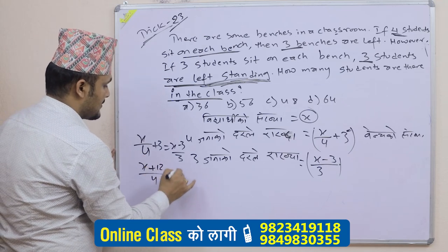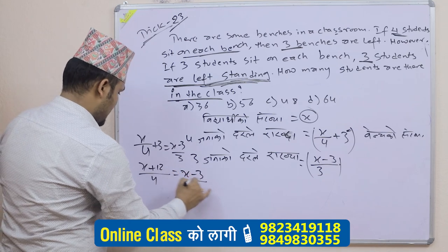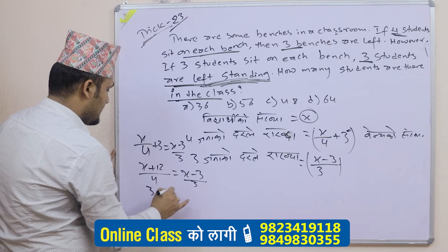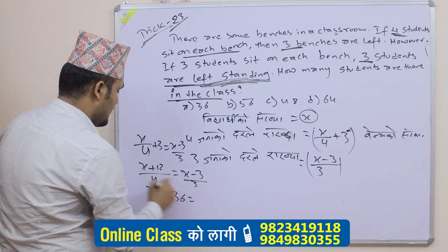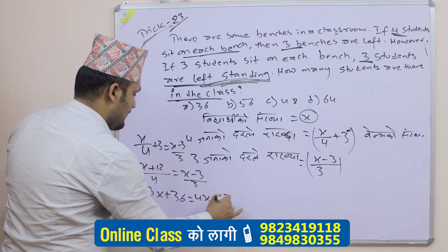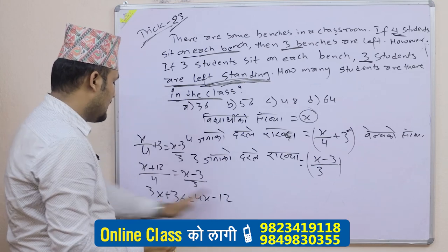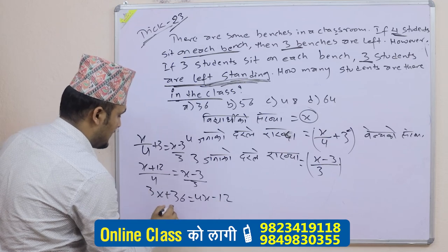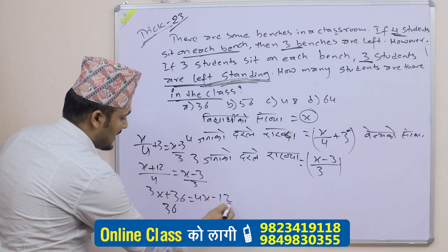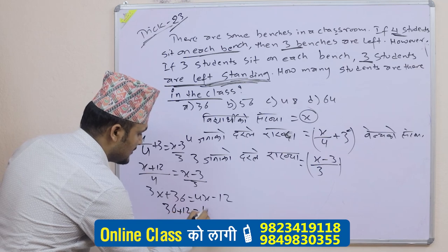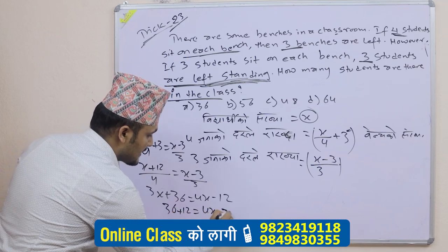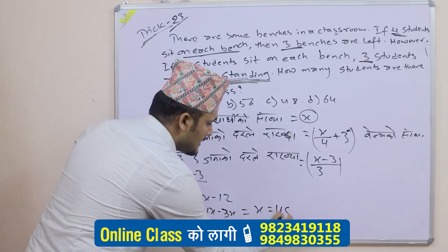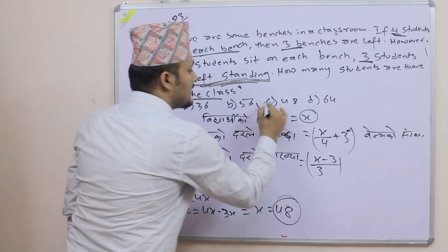x plus 2 will equal x minus 3 over 3. Cross multiplying: 3x plus 2 times 3 equals 4x minus 3. Solving: 12 equals 4x minus 3x, so x equals 34. Therefore the number of students is 48.